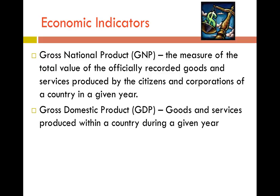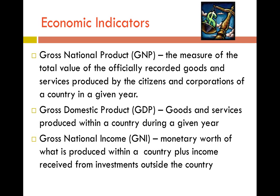So if it's produced within a country, the GDP would encapsulate that. But since it's an American company, it would be in our GNP. The last one, which is the newest of the economic indicators, would be gross national income — GNI — which is the monetary worth of what is produced within a country plus income received from investments outside of the country. The big difference there involves investments and taxation for gross national income.